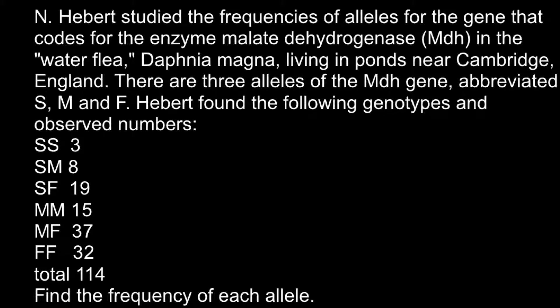Here is a problem. Herbert studied the frequencies of the alleles for the gene that codes for the enzyme malate dehydrogenase in the water flea Daphnia magna living in the ponds near Cambridge, England. There are three alleles of the MDH gene, abbreviated S, M, and F. Herbert found the following genotypes and observed numbers, and you see here the genotypes possible with three alleles.